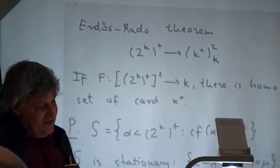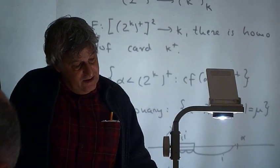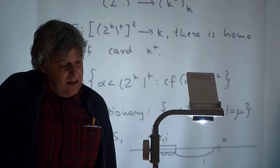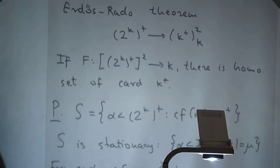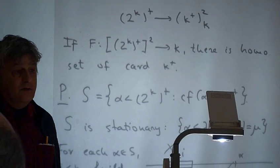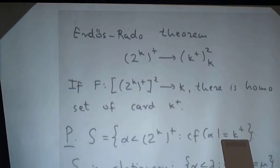As we got used to it, the von Neumann definition of ordinals. And let's take the set S of all limit ordinals alpha less than kappa plus, whose cofinality is kappa plus.